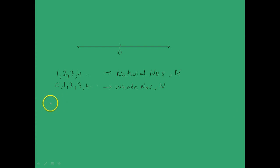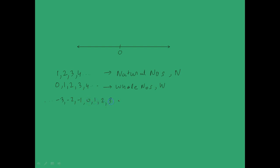Now if you consider all the negative numbers possible, that is from minus infinity to say minus 3, minus 2, minus 1, and also consider all the whole numbers, that is 0, 1, 2, 3, etc., you get a set which is called the set of integers, which is represented by Z.